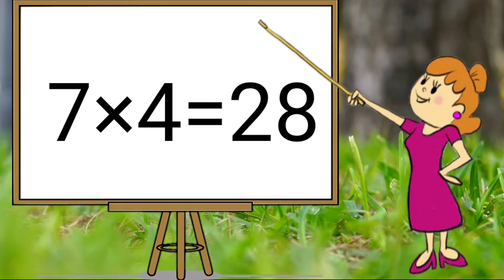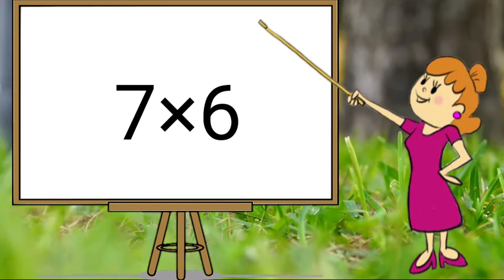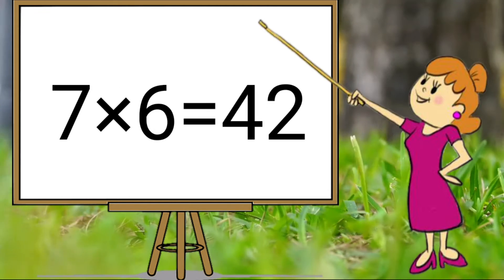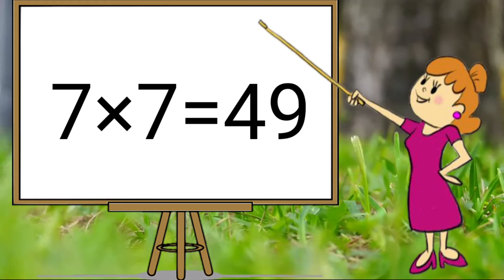7 4s are 28. 7 5s are 35. 7 6s are 42. 7 7s are 49.